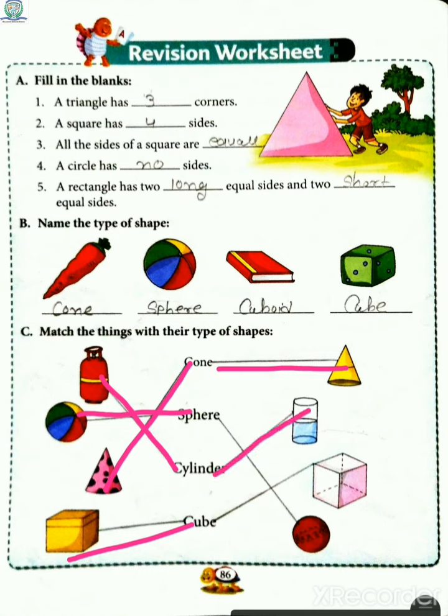Phir kya hai? Phir hai ek ice cube, ise hum cube se match karenge. Aur last mein hai ball, use hum sphere se match karenge.